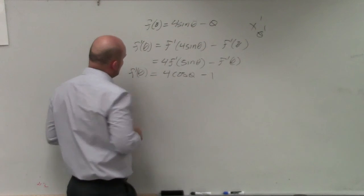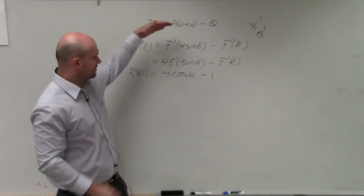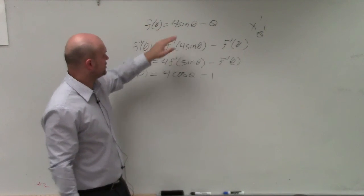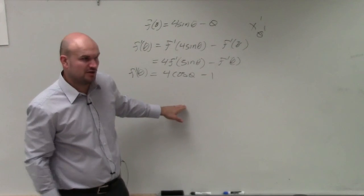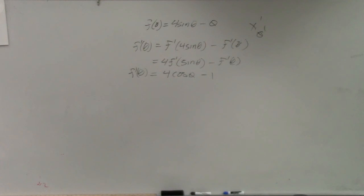So f prime of theta equals 4 cosine theta minus 1. I showed a lot of the properties because that's what we talked about, but you could easily go from here to here without showing all those steps. I'm just trying to connect what the properties are.